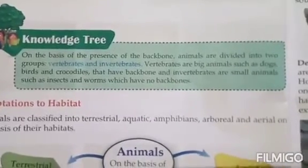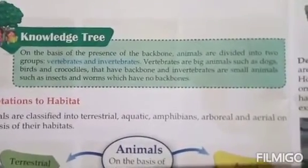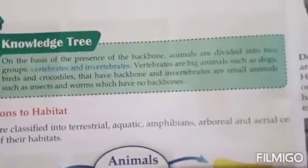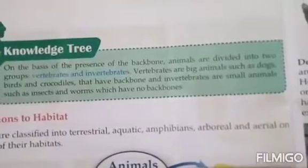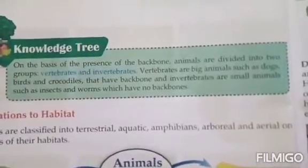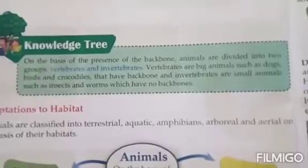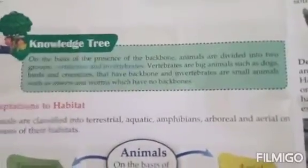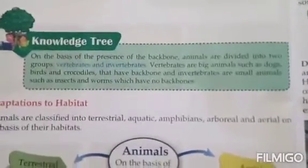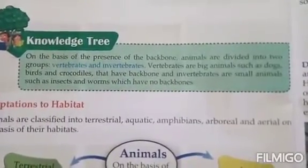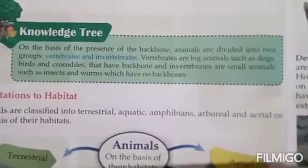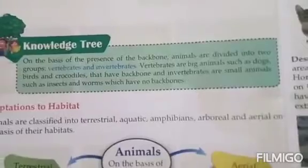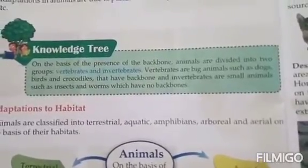Vertebrates are animals such as dogs, birds, and crocodiles that have a backbone. Invertebrates are small animals such as insects and worms which have no backbone.